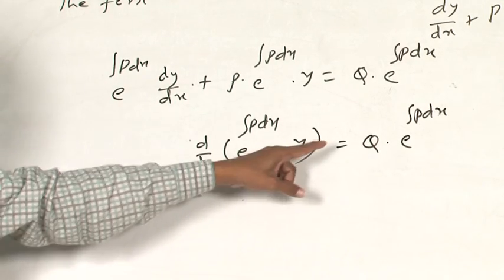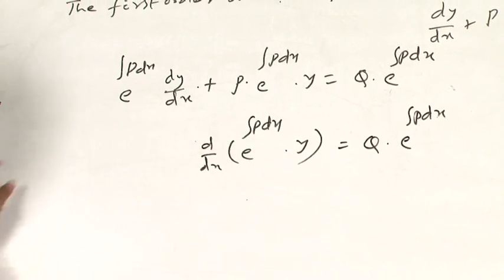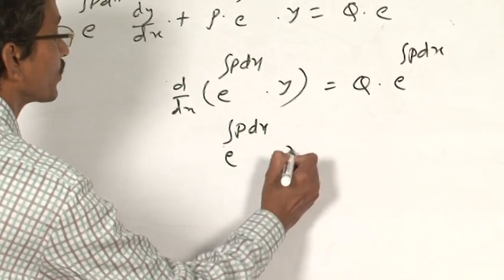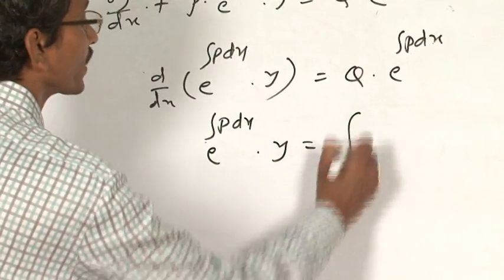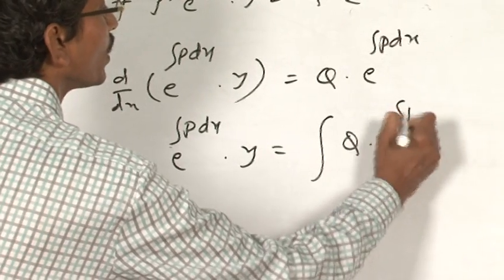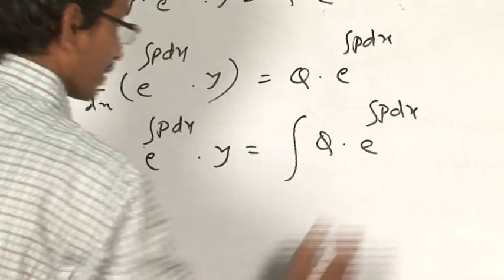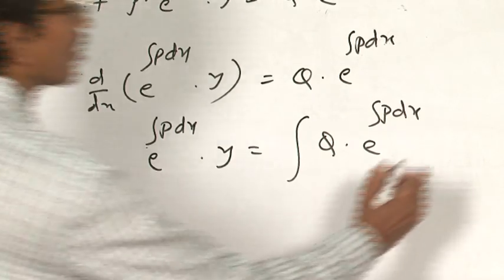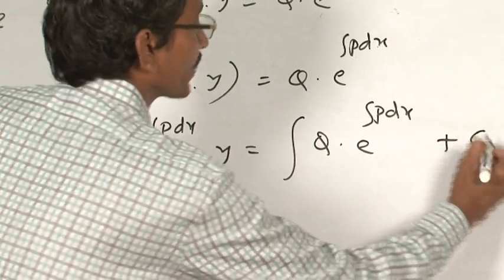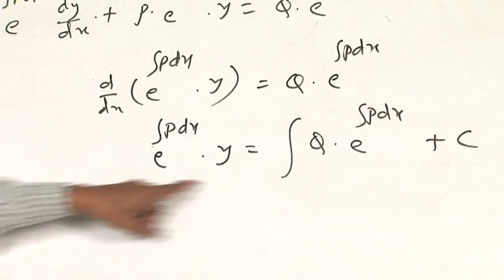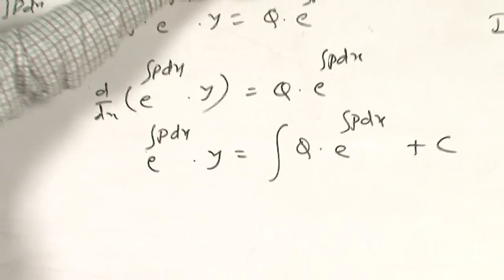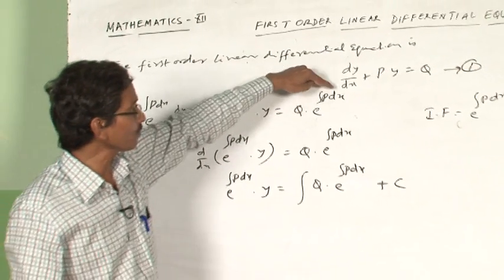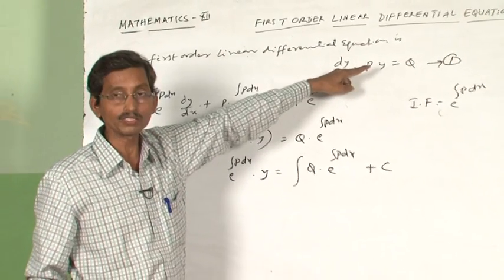Taking the integration of the given equation on both sides, it becomes: e power integral P dx times y, equals the integration of Q times e power integral P dx, plus a constant of integration. This is the general solution of the given differential equation of the form dy by dx plus P y equals Q.